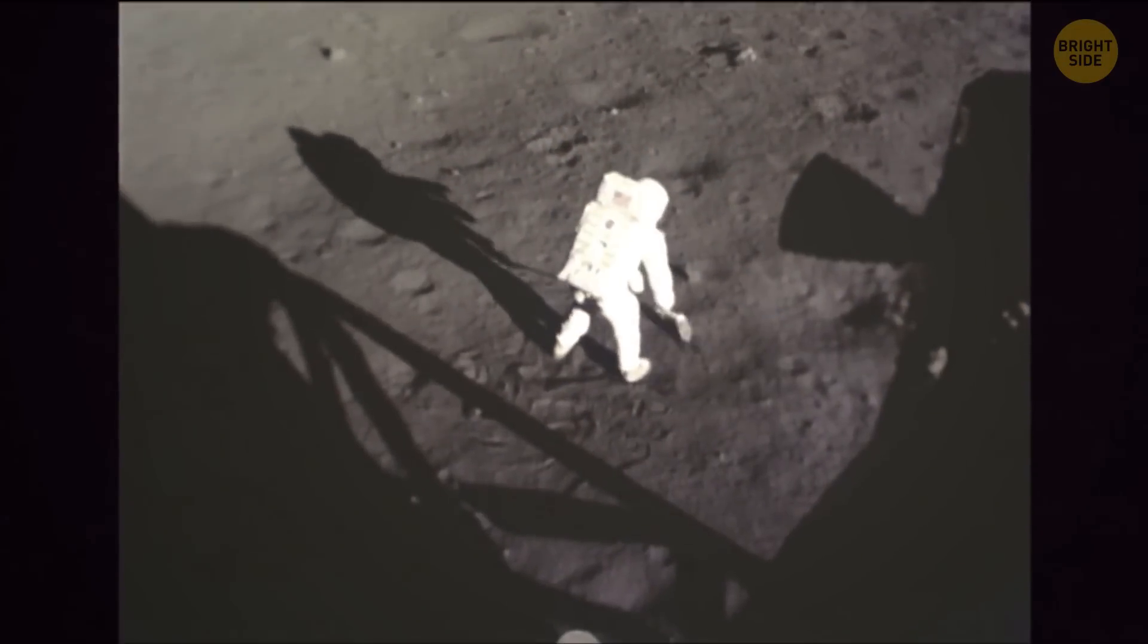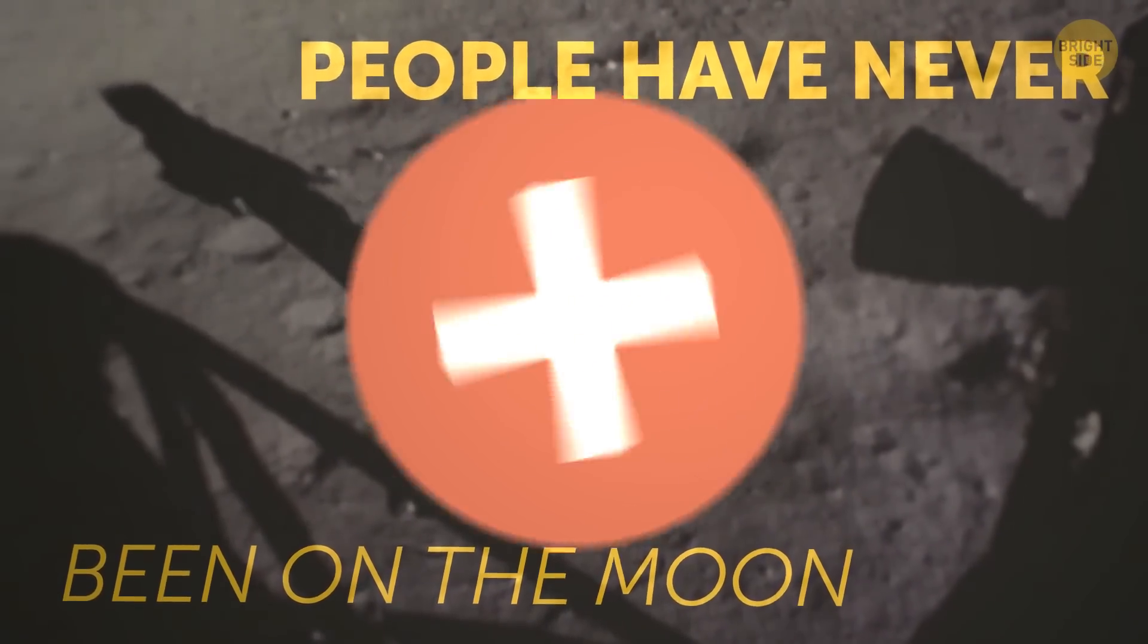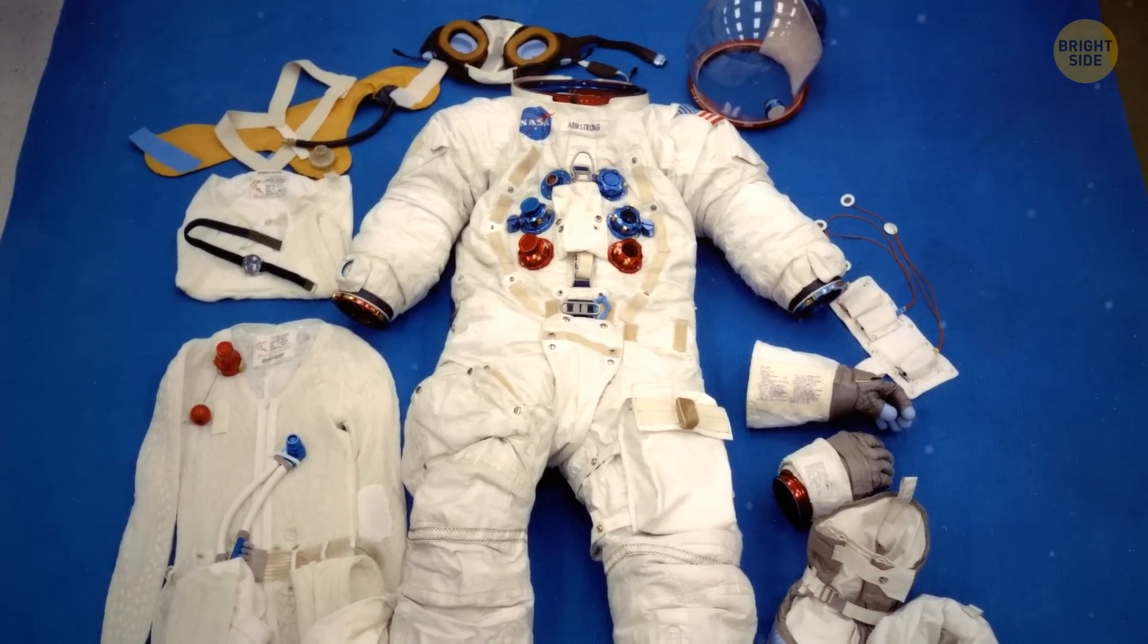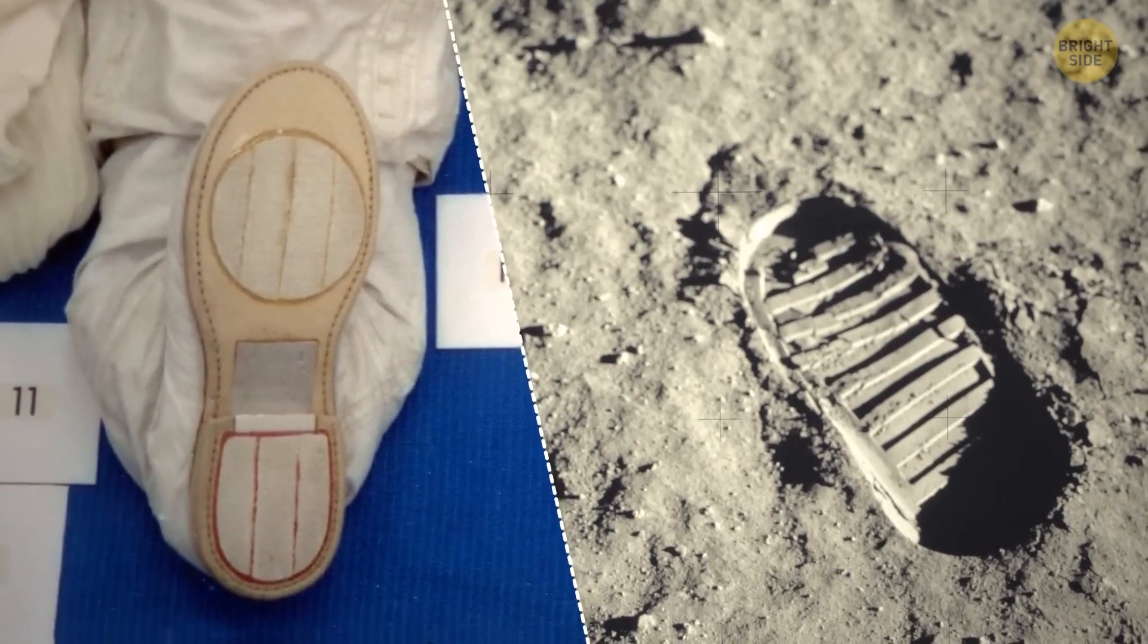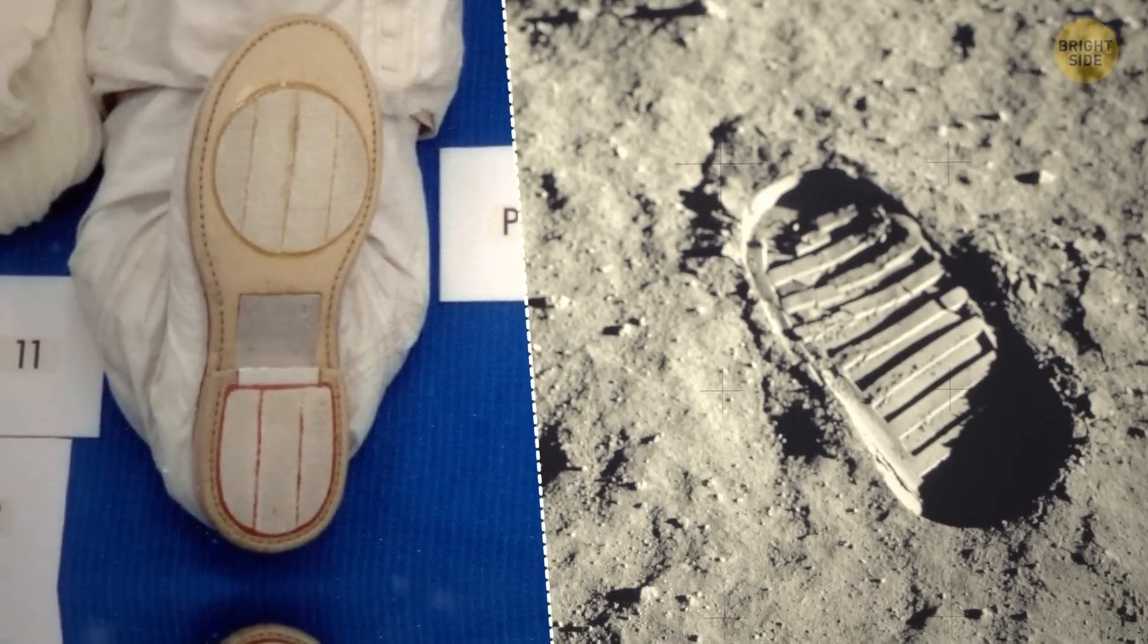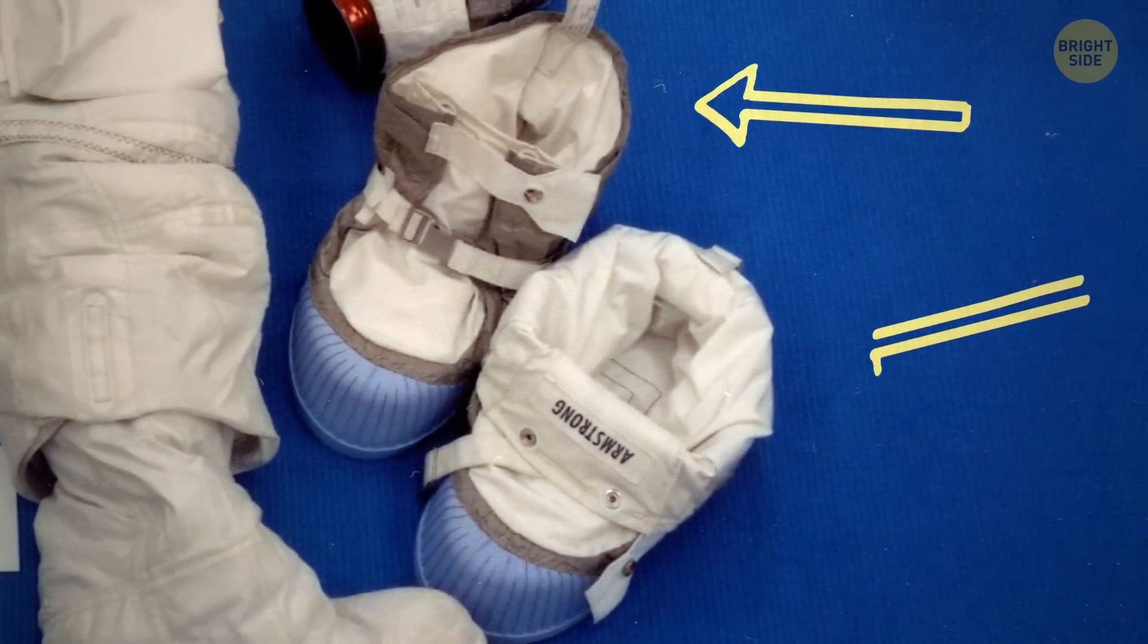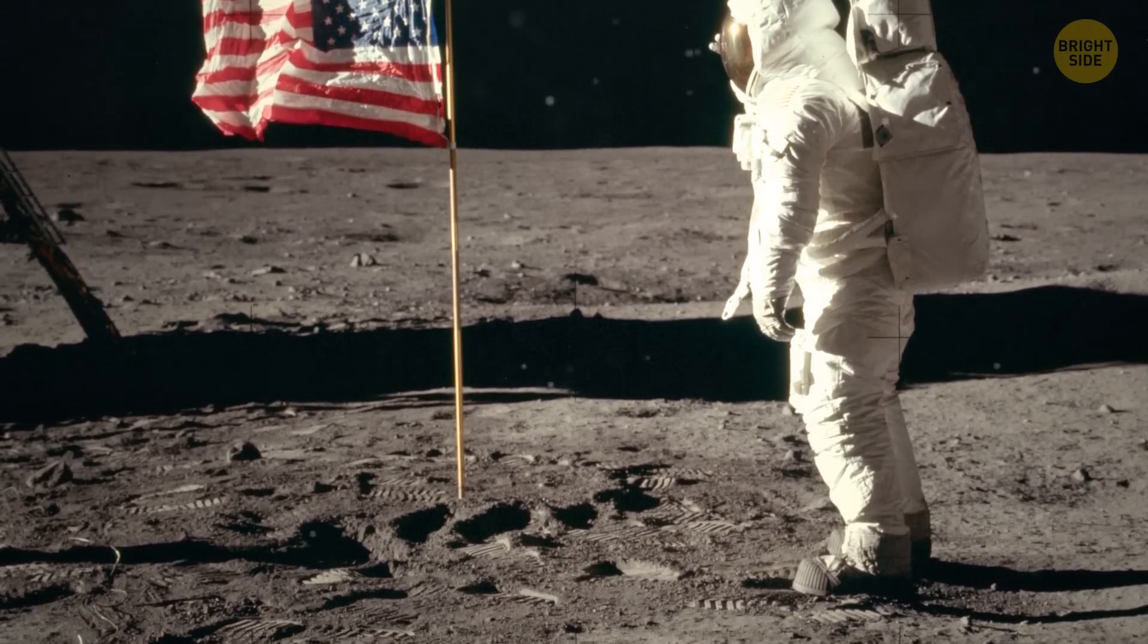One myth that turned out to be untrue is that people have never actually been on the moon. This is the original space suit of the first astronauts who were there. Look at the sole of the shoe. Some people claim there's no way they could have left footprints like this there. Actually, they could. On the moon, the astronauts wore extra boots over their suits, and their soles matched the footprints on the moon perfectly.